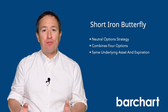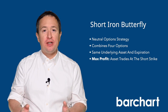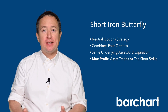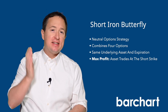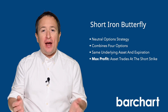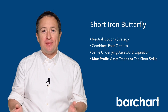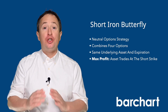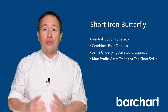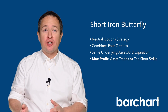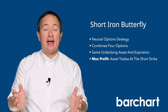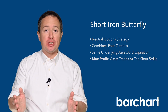The maximum profit condition occurs if the asset's price ends at exactly the middle strike price, which is rather unlikely. However, you will make a profit so long as the underlying trades between the breakeven points at expiration.